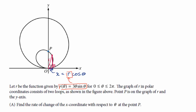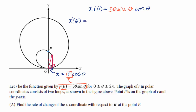We can write x of theta equals r times cosine of theta, and since r equals three theta sine theta, we get x of theta equals three theta sine theta times cosine of theta. Now we want to find the rate of change of the x-coordinate with respect to theta at point P, so we find the derivative x prime of theta. We have the product of three expressions: three theta, sine theta, and cosine theta.